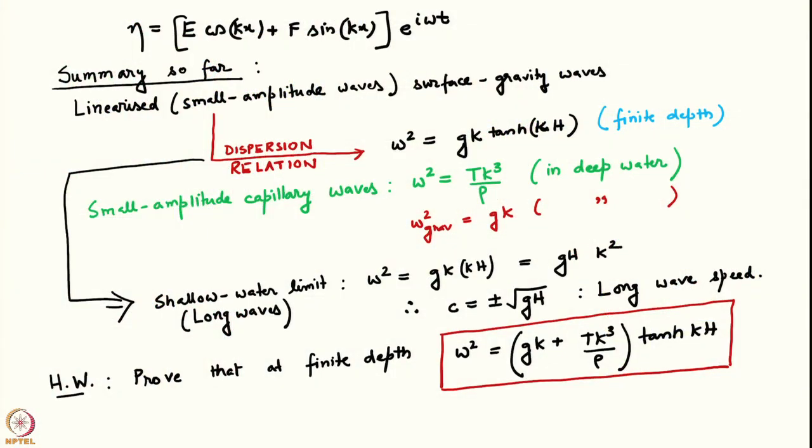We were looking at capillary gravity waves on a deep pool. Let us summarize what we have seen so far. We have seen that the dispersion relation for small amplitude surface gravity waves on a pool of finite depth h is given by omega squared equals g k times tanh(kh). Here h is the depth of the undisturbed pool. We have looked at the deep water limit of this relation, and in that limit we have also included the effect of surface tension. Pure capillary waves are governed by omega squared equals T k cubed by rho in deep water, while pure gravity waves are governed by omega squared equals g k.